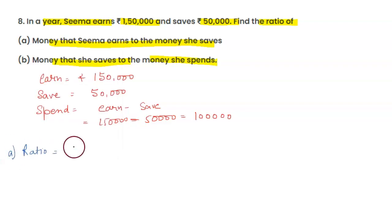Part (a): Money that Seema earns to the money she saves. Earn is 1,50,000 and save is 50,000. Canceling zeros, 150 to 50 becomes 15 to 5, which gives us the ratio 3:1.